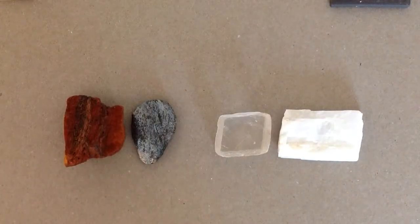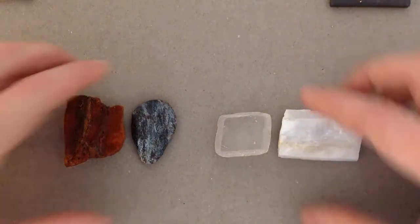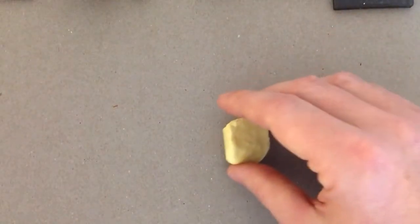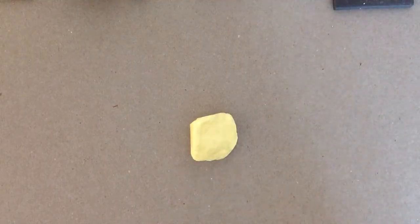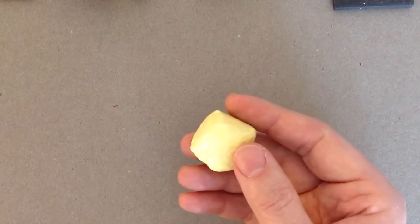So color is not a good identifying property. There are two minerals, though, that we identify by color. One of them is called sulfur. Sulfur is easy because it's yellow. It smells like rotten eggs. It looks like scrambled eggs. That's an easy one to identify.